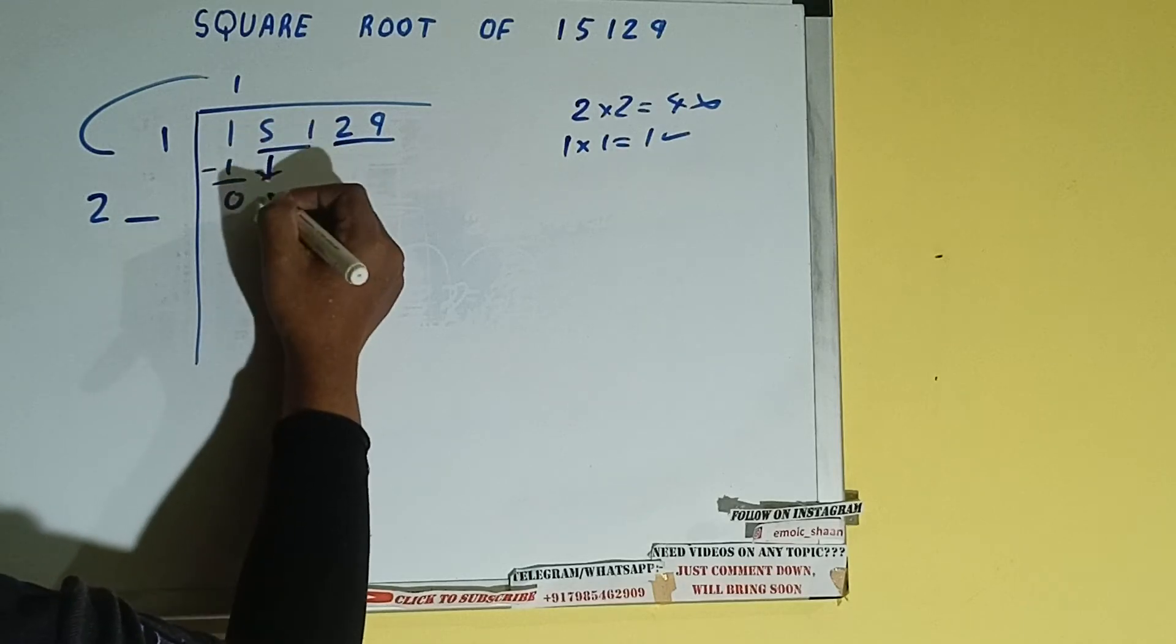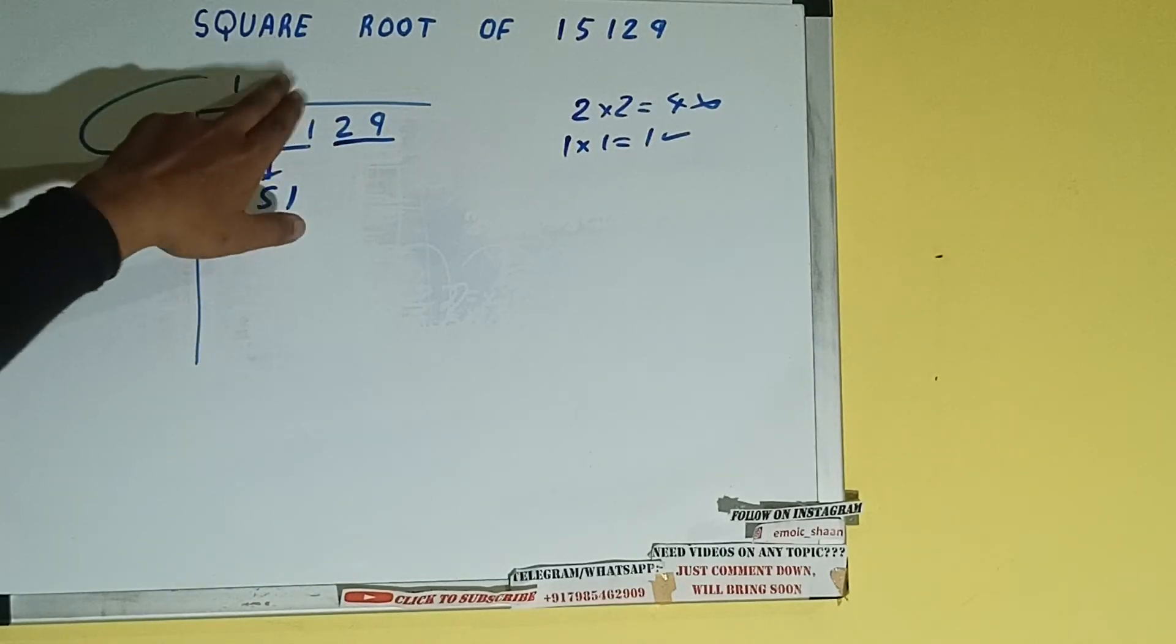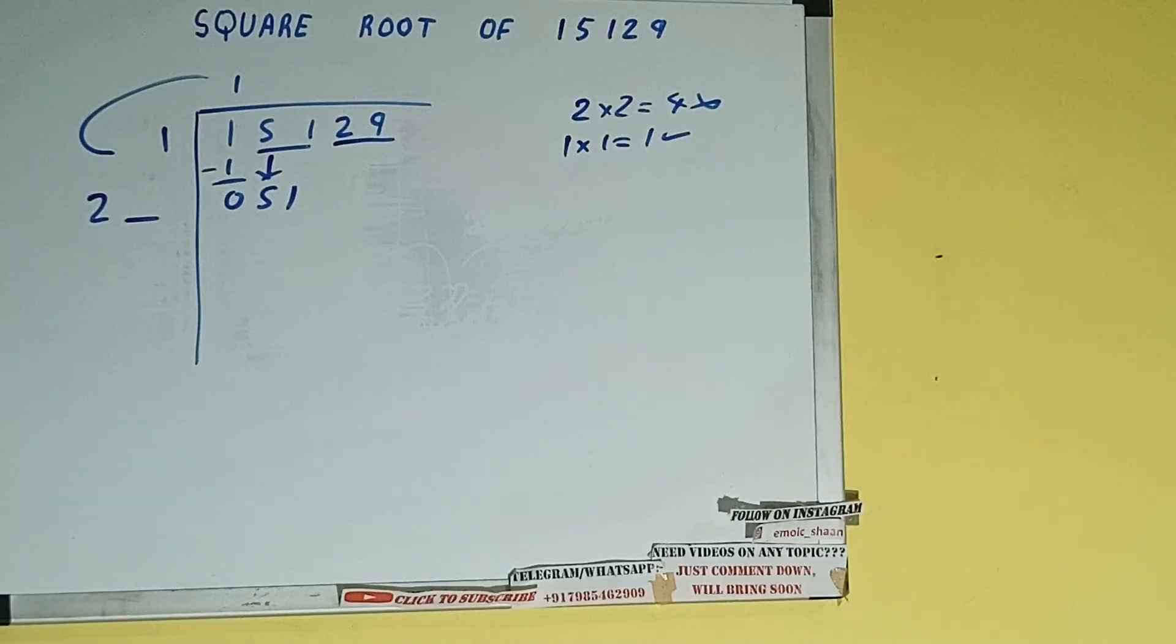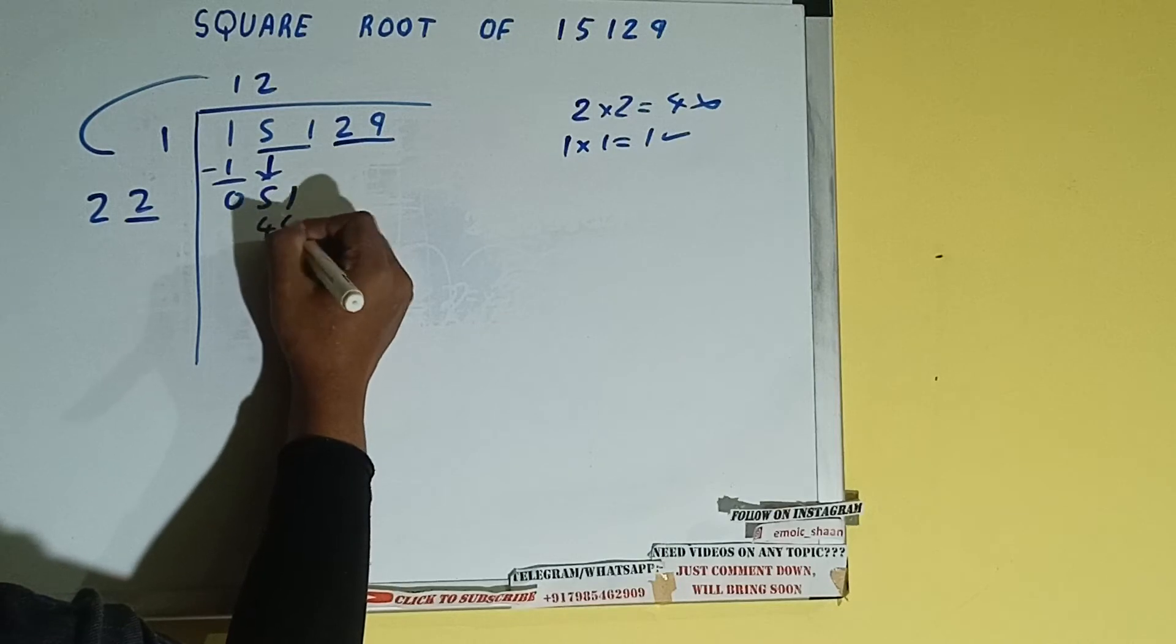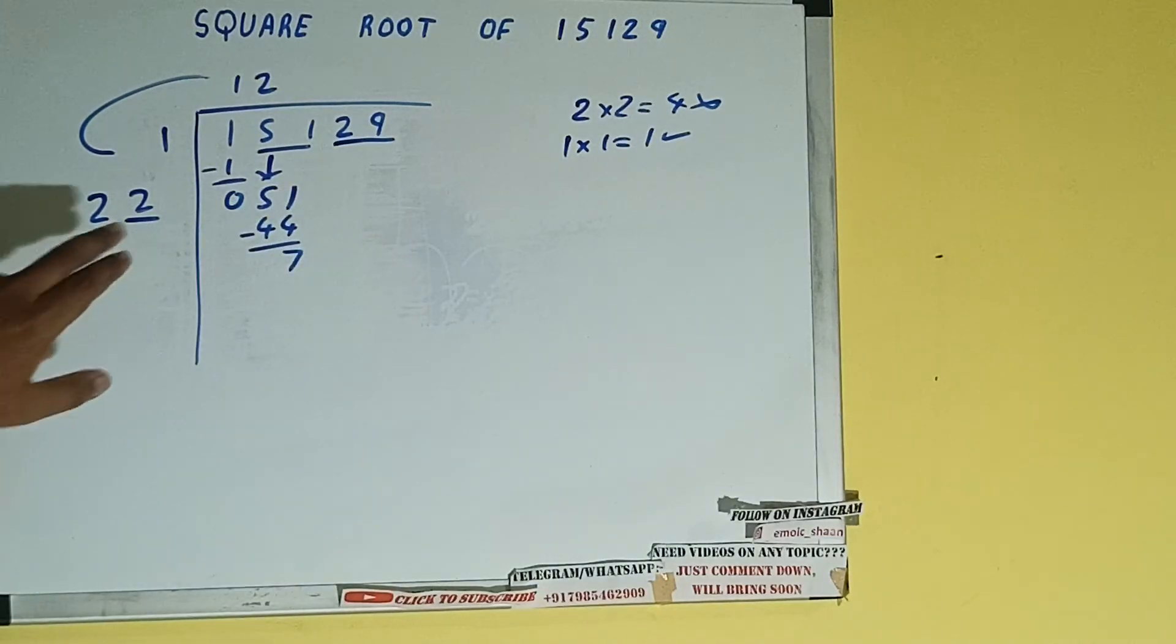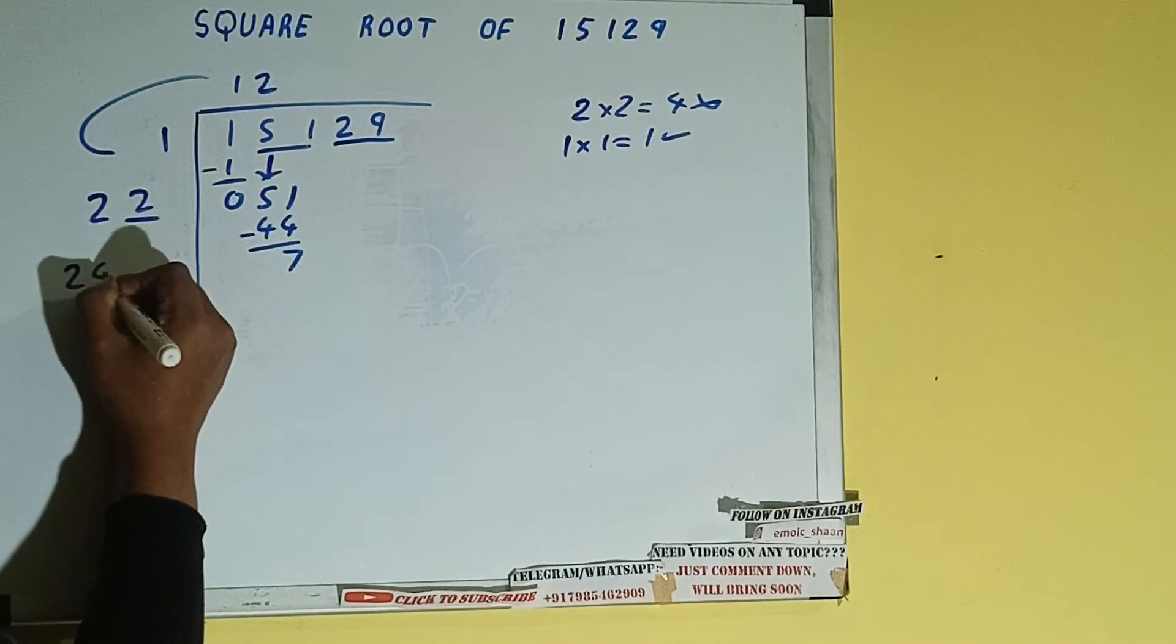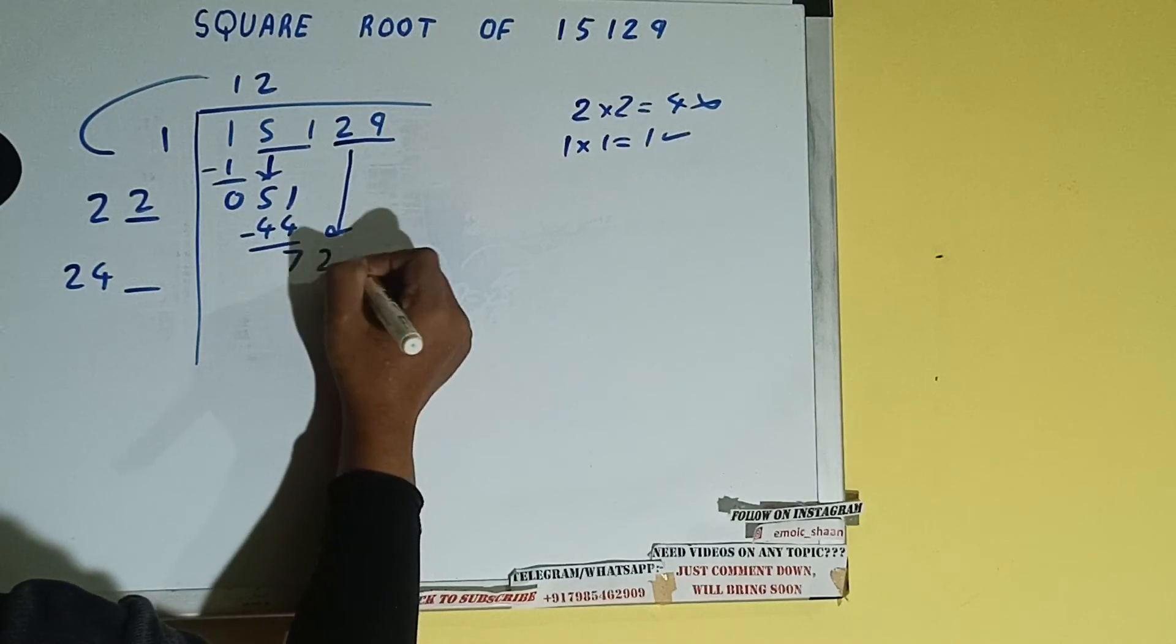Now whatever number we write here, we have to write here also. So if we write 2 here and 2 here it will be 44. Subtract, 7 will be left. Now 22 into 2, so add both. 22 plus 2 will be 24 and keep a digit extra. This number we need to make it big, so bring the next pair down and it will be 729.